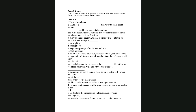To summarize: a hypotonic solution has less solute — plant cells become turgid because the central vacuole fills with water, while red blood cells swell and burst — this is called hemolysis. Hypertonic solutions have more solute than the cell, so water flows out — plant cells become plasmolyzed and red blood cells become crenated. In isotonic solutions, there is no net movement of water.